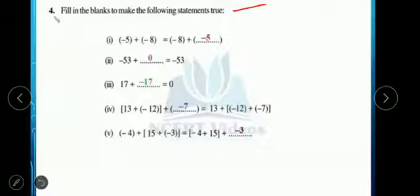First one. Minus 5 plus minus 8 equals minus 8 plus minus 5. What will come? Minus 5 will come. Why? Because you have learnt the commutative property. A plus B equal to B plus A. Here A plus B, here B came first. It means A will come. Minus 5 will come.